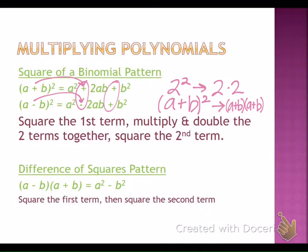The difference of squares pattern: when everything in your parentheses looks the same except one sign is plus and one sign is minus. The first terms will be the same, the second terms will be the same — the only difference is one plus and one minus. The shortcut: square the first term, then square the second term. The sign in your answer will always be minus, because the name 'difference of squares' means subtraction.